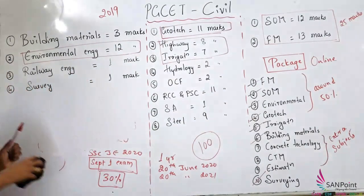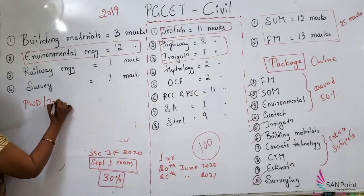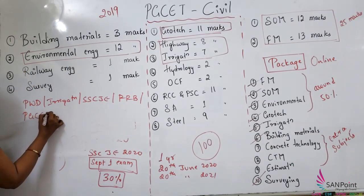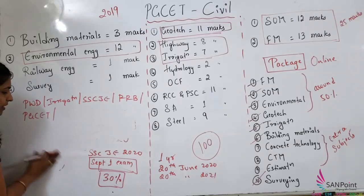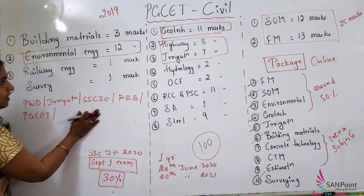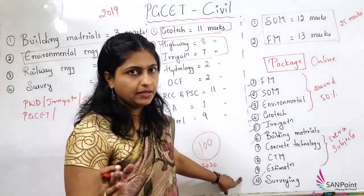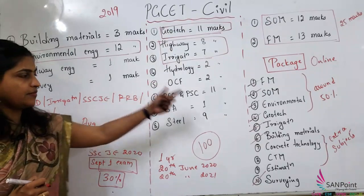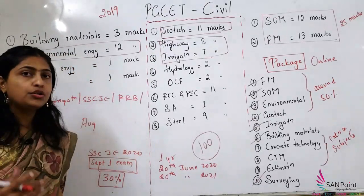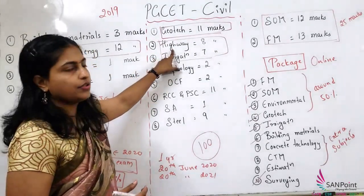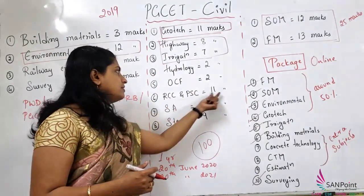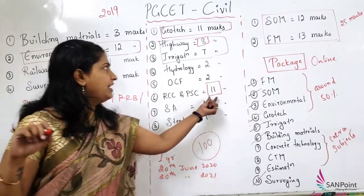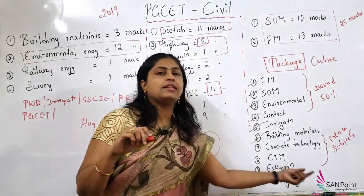Do not think you need to buy separate videos of the same FM for PWD and others. Once you purchase, they are valid for one year and all your exams — PWD, irrigation, SACJE, RRB, PGCT, BBMP, BWSSB, KPTCL, KPCL — are taken care of. Once you complete these subjects, if you are able to finish by July last week, contact us back and we can give you highway and RCC, since RCC and highway together constitute around 18-20 marks.